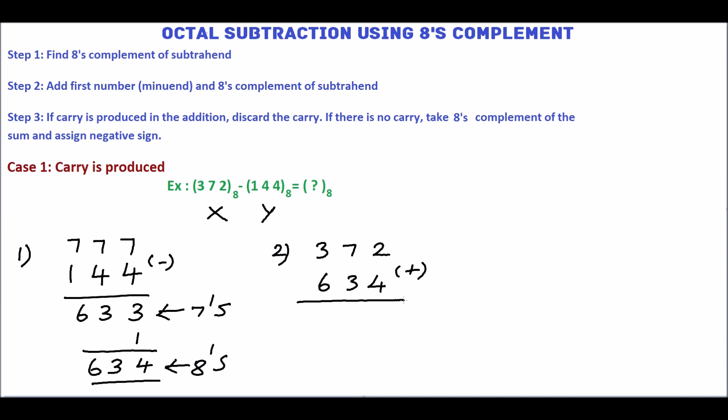2 plus 4 is 6. 7 plus 3 is 10. 10 is not an octal number. We will convert this. The quotient is 1 and the remainder is 2. So the equivalent octal number is 1, 2. 2 is the sum and 1 is the carry.